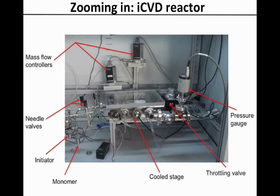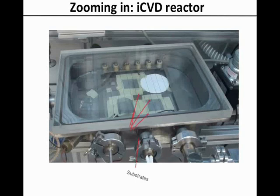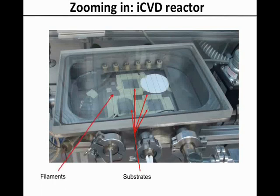The reactor is covered by a thick quartz plate, which allows visual access to the reactor. In this slide we can see different kinds of substrates with different sizes being coated simultaneously. The tungsten filament array is located a few centimetres above the substrates.